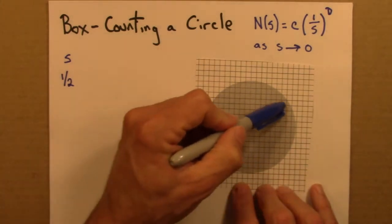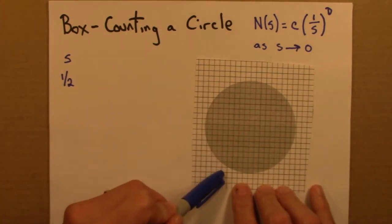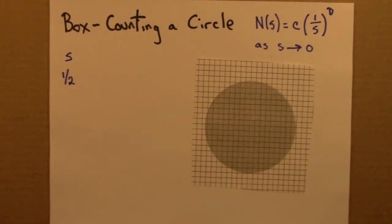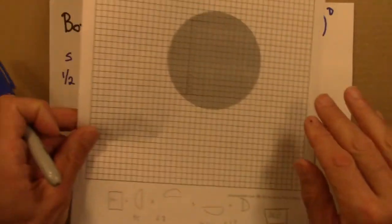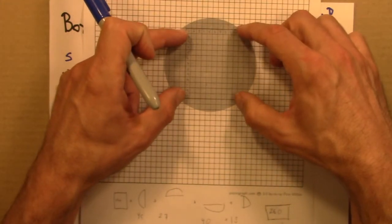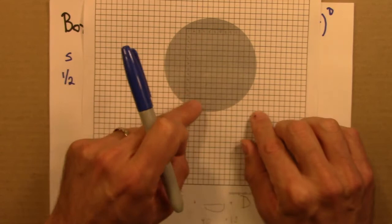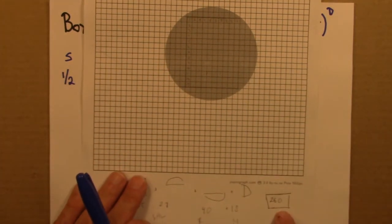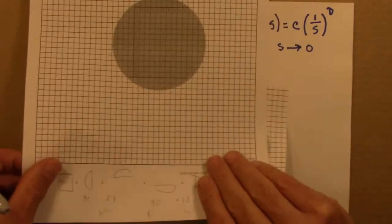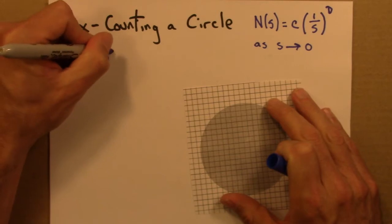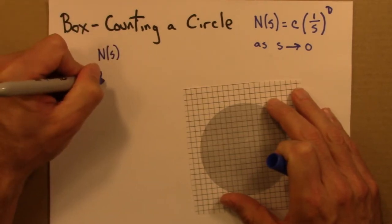So then we're going to need to count all the boxes in here. Rather than do that live on camera, I did that a little while ago. It's actually not as much work as one might think, because there's a rectangle in the middle that you can count pretty easily, and then you just have to count the oval edges. So I did that, and I got 260. So for that, N of S is 260.